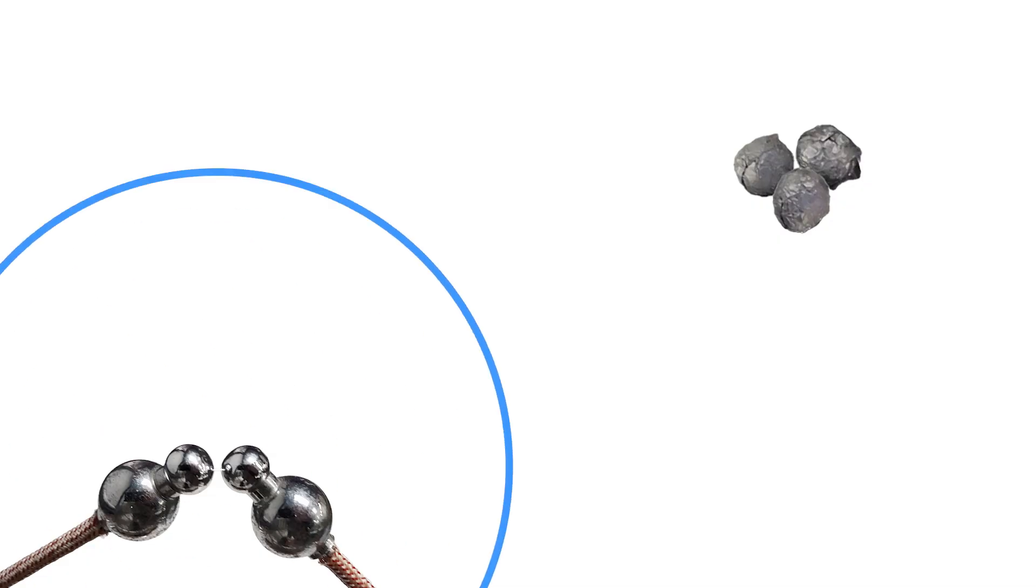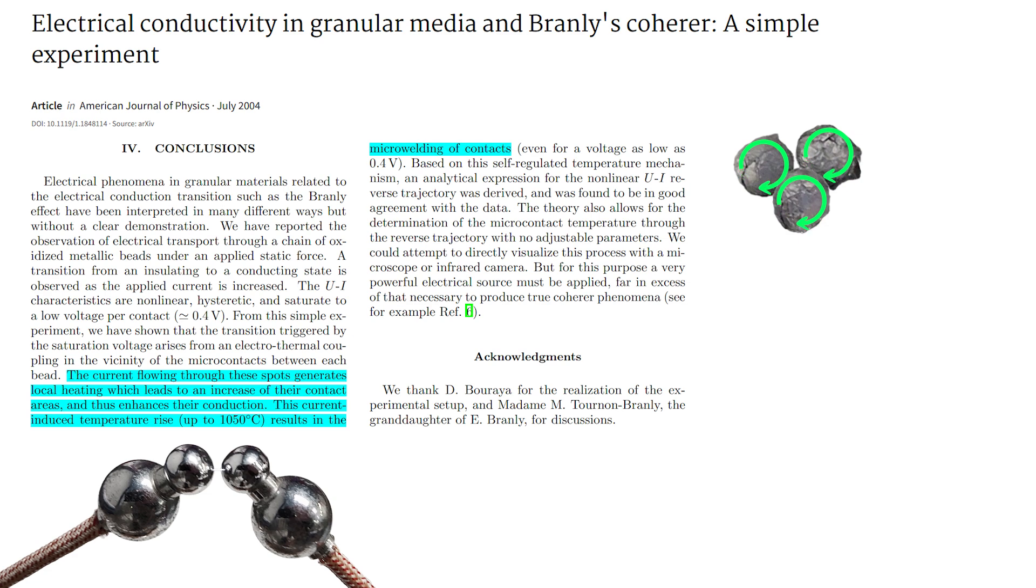To answer how this works, electrical discharges produce electromagnetic waves which induce currents in metals. According to this paper, the current flowing through these spots generates local heating which leads to an increase of their contact areas and thus enhances their conduction.